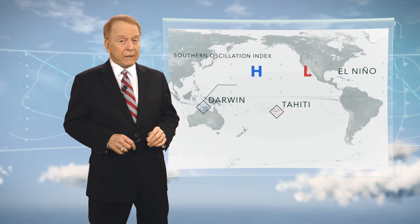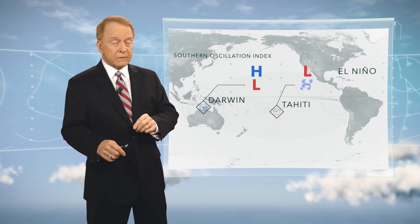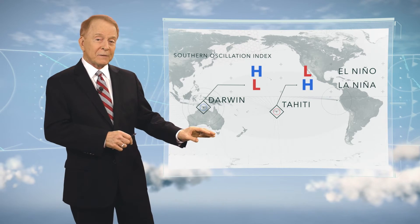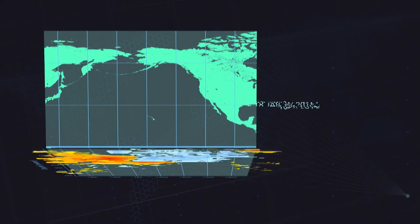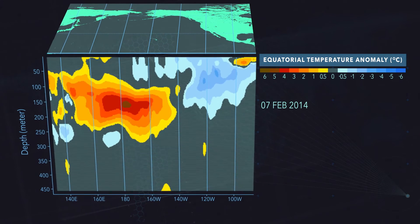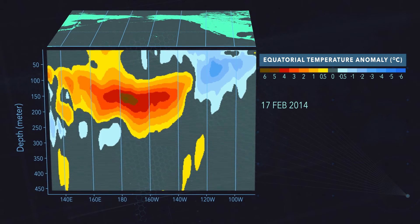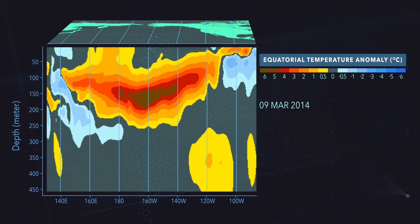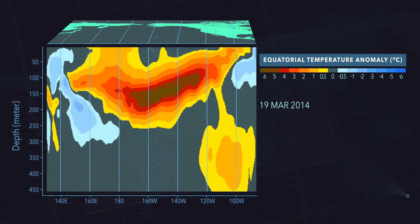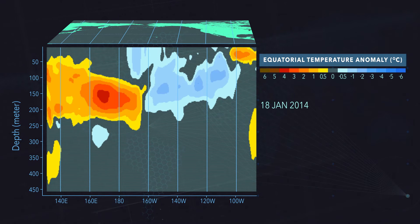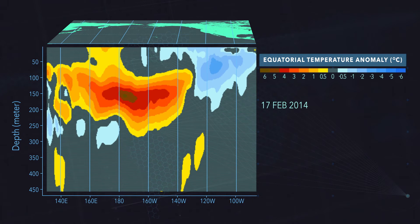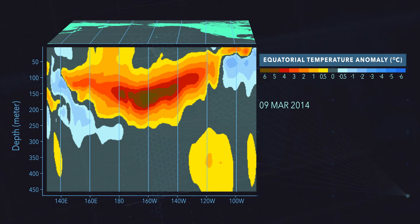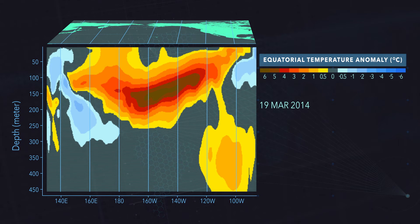Conversely, when the air pressure pattern is reversed, we may have a La Niña, which is the cool phase. Here we're looking at a vertical cross-section of the ocean along the equator. We can see a large area of warmer-than-normal water moving eastward — it's part of the ocean-atmosphere system trying to correct the energy balance, shoving the heat to the east.